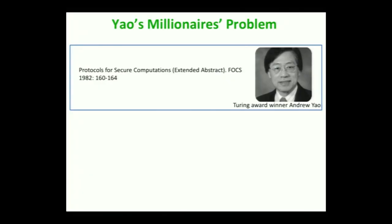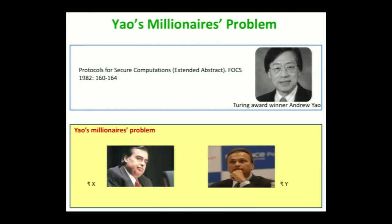Yao's millionaires problem was introduced by Turing Award winner Andrew Yao back in 1982 in his foundational work called 'Protocols for Secure Computation.' To be consistent with the pictures in the slide we can call it Yao's billionaires problem. The problem is that we have two billionaires who would like to know who is richer between them but without disclosing their exact assets to each other.